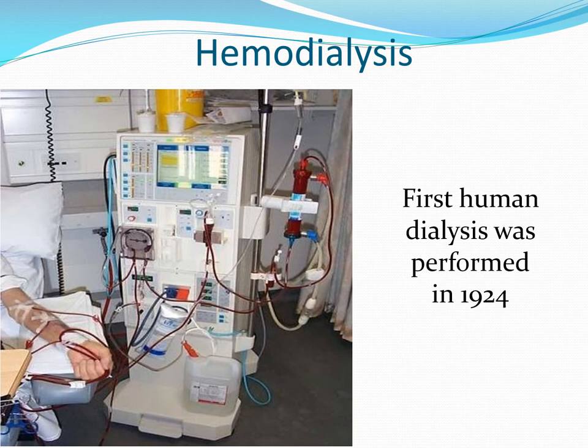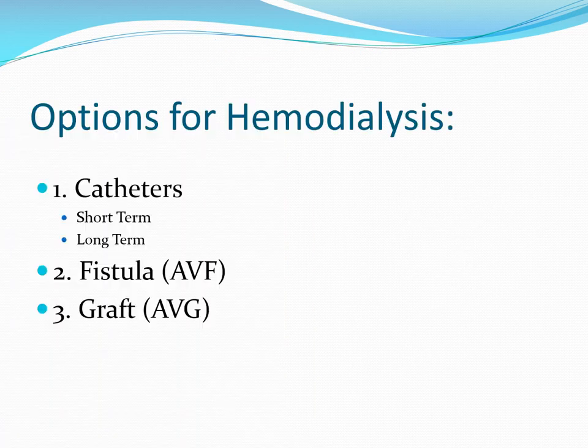If there is an outflow stenosis, the venous pressure will be high. If there is arterial stenosis, the venous suction pressure will be high. The different options we have for hemodialysis are short- and long-term catheters, fistulas, and grafts.